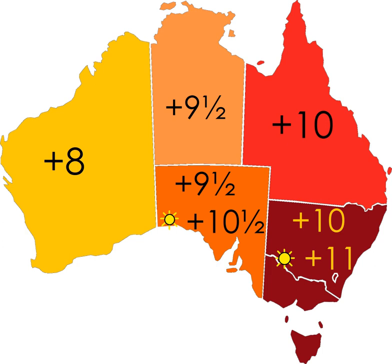Lord Howe Island, part of the state of New South Wales but 600 kilometres east of the Australian mainland in the Pacific Ocean, uses UTC+10:30 during the winter months but advances to UTC+11 in summer. A compromise between Western and Central Time — UTC+8:45, without DST, and officially known as Central Western Standard Time — is used in one area in the southeastern corner of Western Australia and one roadhouse in South Australia.